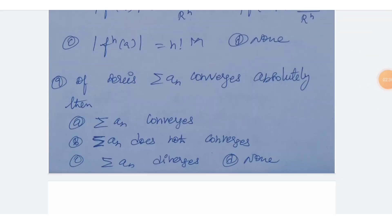Next question: if the series summation of a_n converges absolutely, then which option is correct? Option A: summation of a_n converges. Option B: summation of a_n conditionally converges. Option C: summation of a_n diverges. Option D: none of the above.